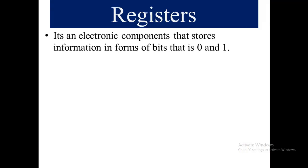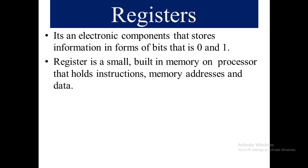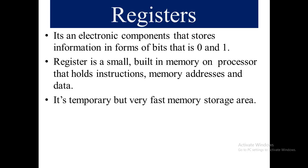A register is basically an electronic component — an electronic chip that stores information in the form of bits, that is 0 or 1. A register is a small, very tiny, built-in memory on the processor that holds instructions, memory addresses, and data. It is temporary but very fast memory storage, because it is built-in on the processor.